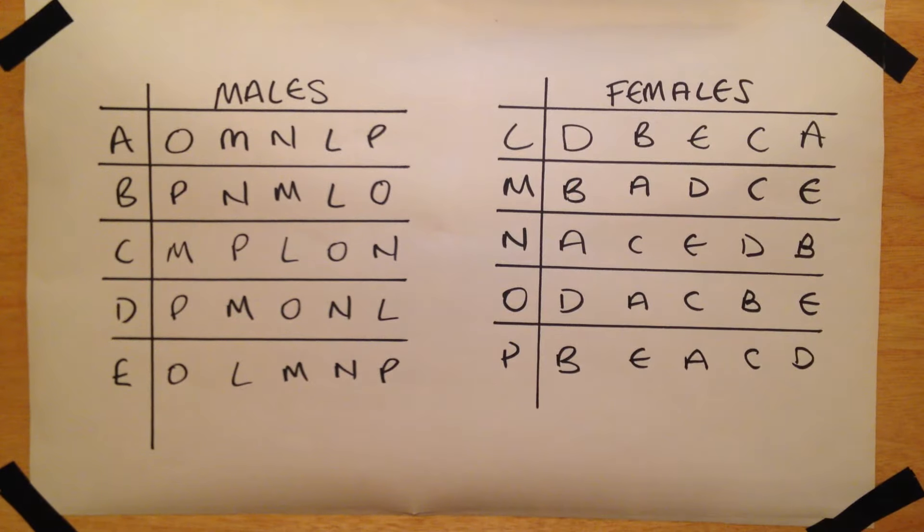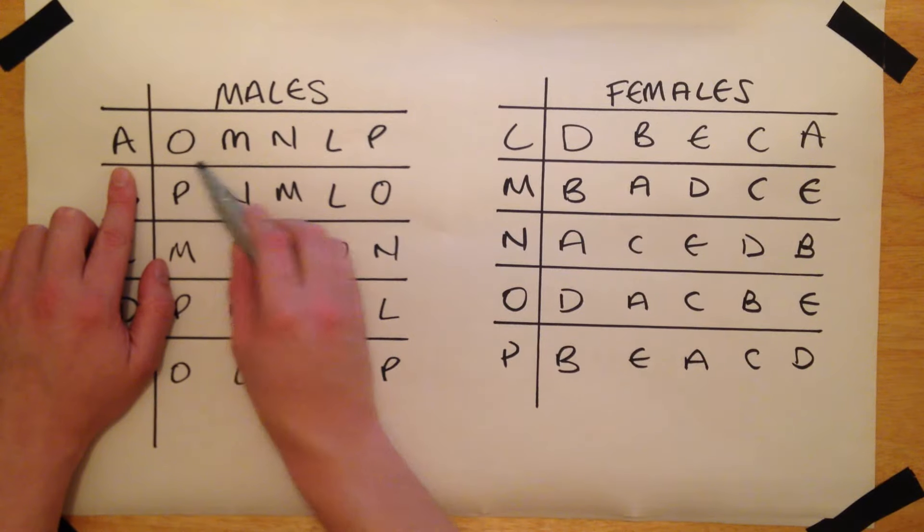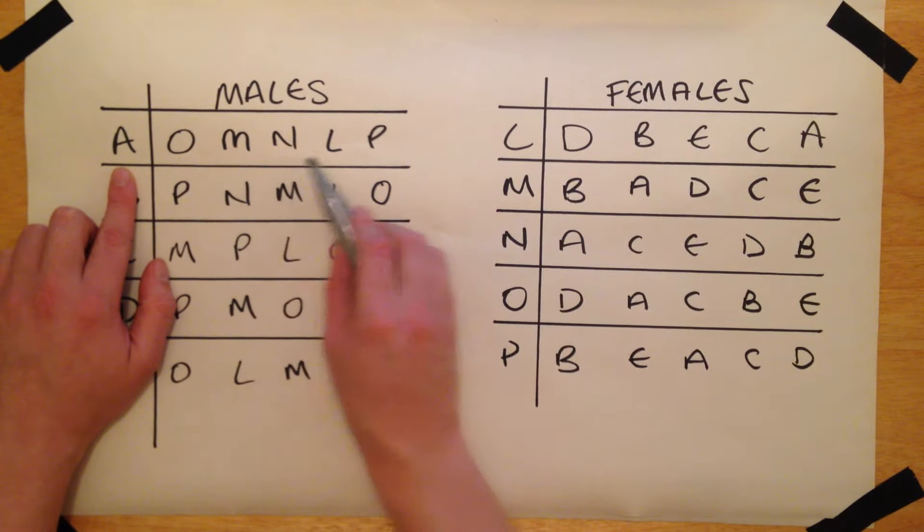As you can see, each person has a list next to their name containing all people from the other set, in order of preference. So, for example, person A would most likely be paired with person O, followed by person M, and so on.